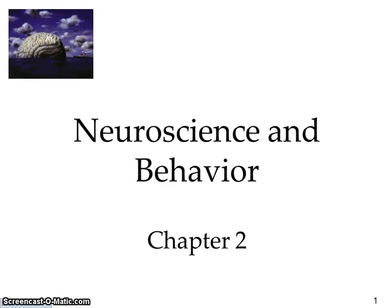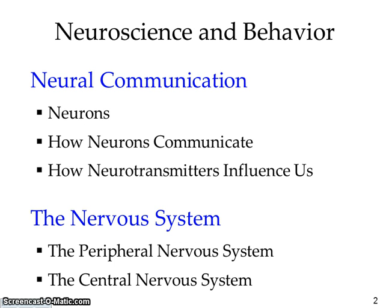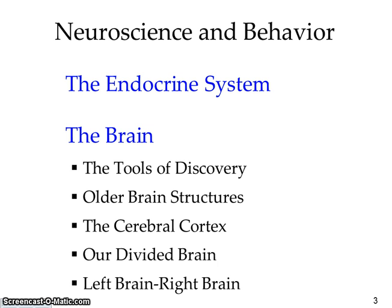Today we're going to look at neuroscience and behavior. This is chapter 2 of the David Myers 8th edition psychology textbook. When we look at neuroscience, we're looking at the brain and how it communicates and helps with our body. This is a really important unit when we look at AP Psychology.